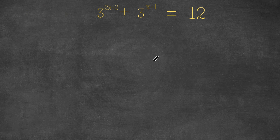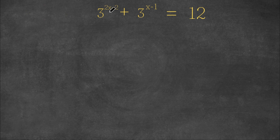Hey guys, welcome back to Click Academics. In today's video, I'm going to be showing you guys how to solve this exponential equation. We have 3 to the power of 2x minus 2, plus 3 to the power of x minus 1, equals 12.